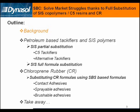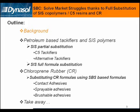This is the outline we are going to review today. We are going to speak about how the petroleum problems impact raw materials, and Dynatol is going to offer you some options to face these problems — either by partial or total substitution of copolymers like SIS, or by full substitution of formulas based on chloroprene rubber, substituted by SBS copolymers.